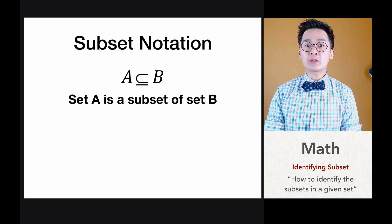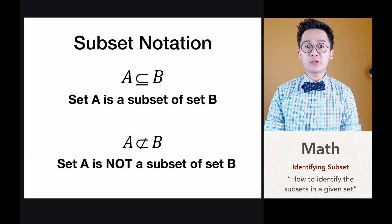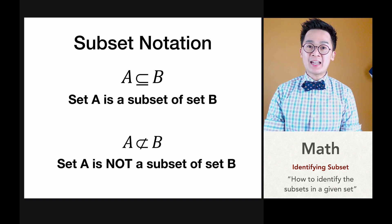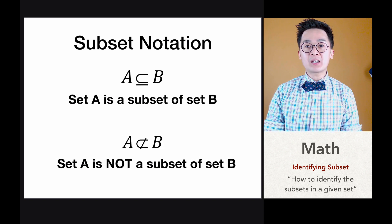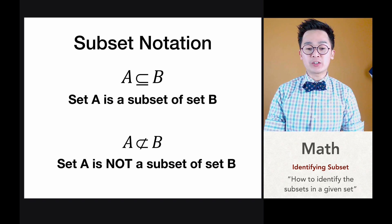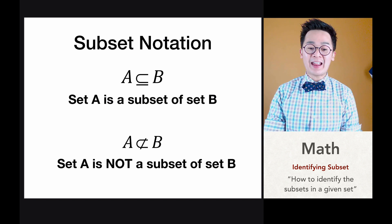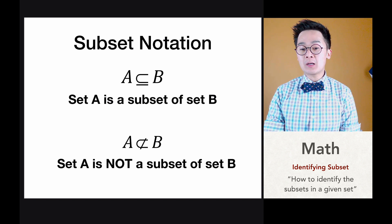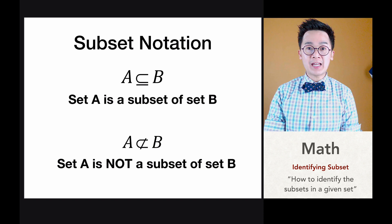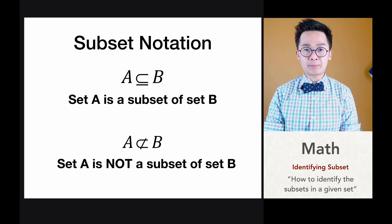If we can denote a subset, we can also denote a set that is not a subset of a certain set. So we could have set A is not a subset of set B, depending on the elements that we have in that particular set.